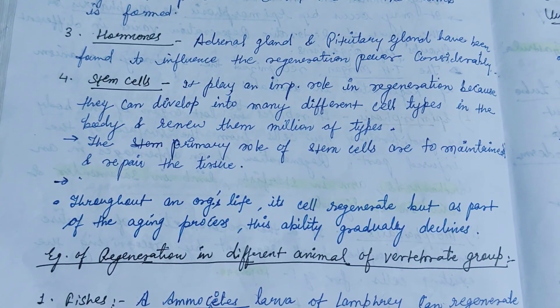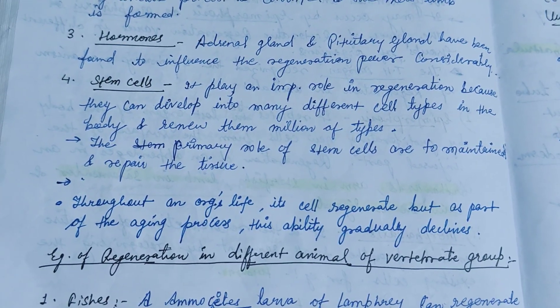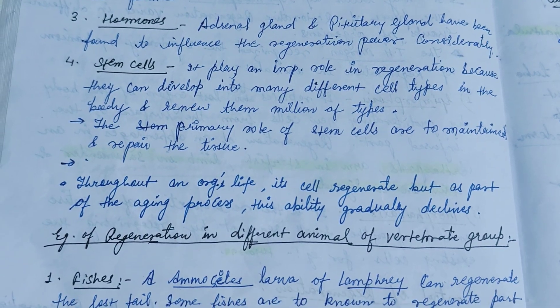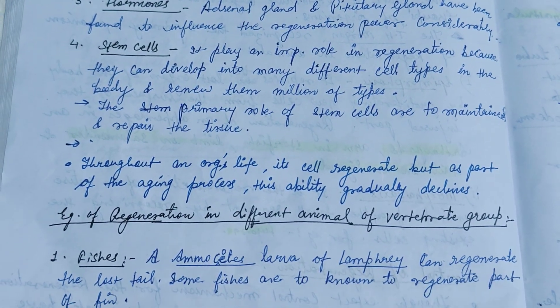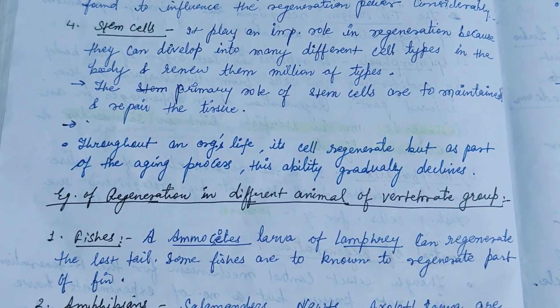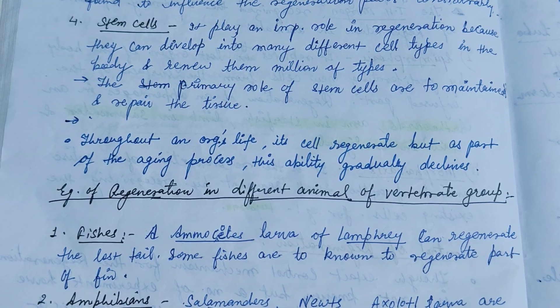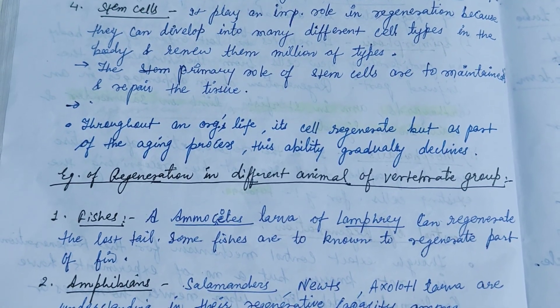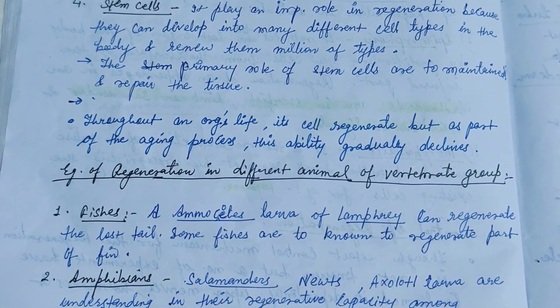Hormones from the adrenal gland and the pituitary gland have been found to influence regeneration power considerably. Stem cells also play an important role in regeneration because they can develop into many different types of cells in the body and renew them in millions of types.